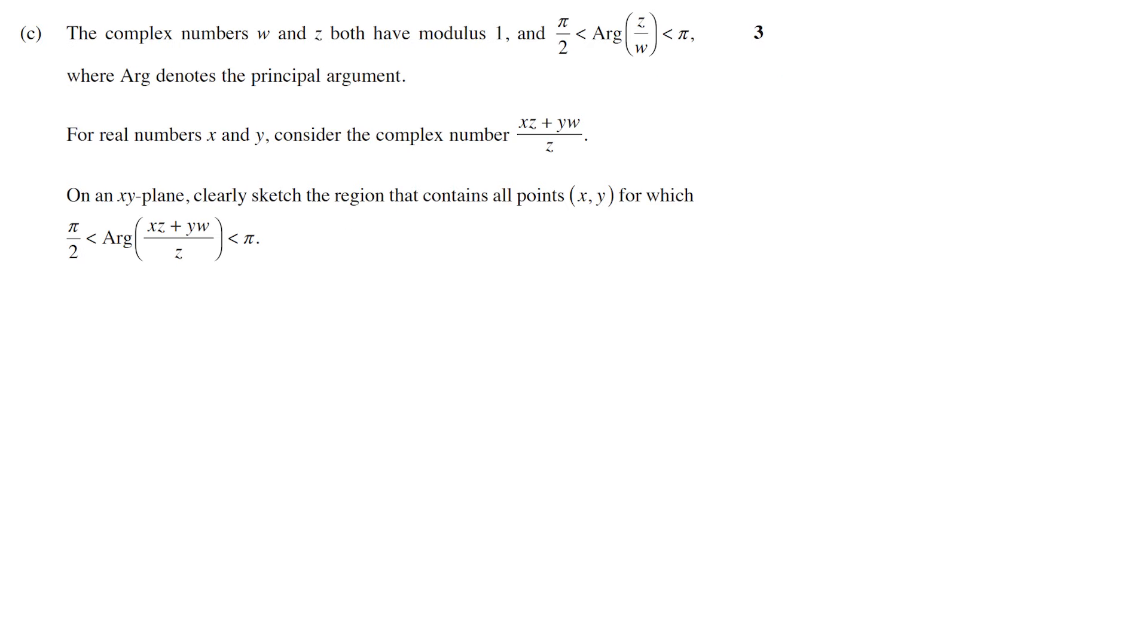So if we start from what information we do know about Z and W, they both have modulus 1, so they're both going to lie somewhere on this circle of radius 1, centered at the origin. And the argument of Z over W is between π/2 and π, which means the complex number Z over W must lie somewhere in this quadrant of the circle.